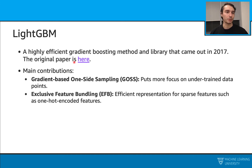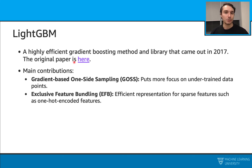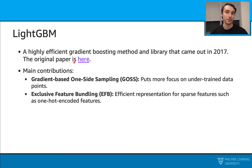The first one is called Gradient-Based One-Side Sampling. This method puts more focus on the under-trained part of the dataset, and we try to learn those more aggressively. The second contribution is called Exclusive Feature Bundling (EFB). This is an efficient representation for sparse features such as one-hot encoded features, and with this we are able to reduce the total number of features that we are dealing with.